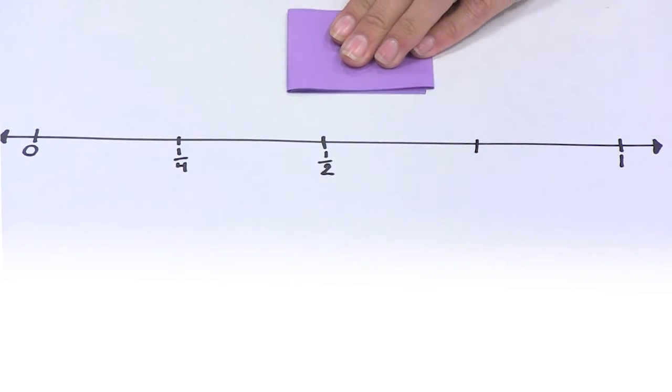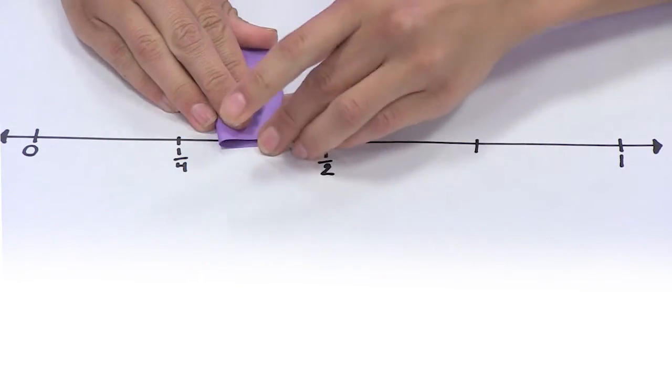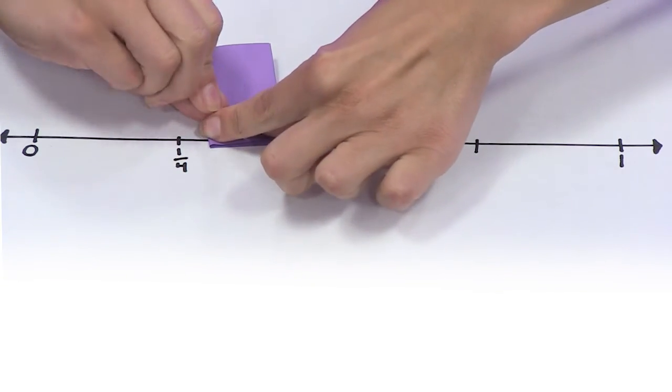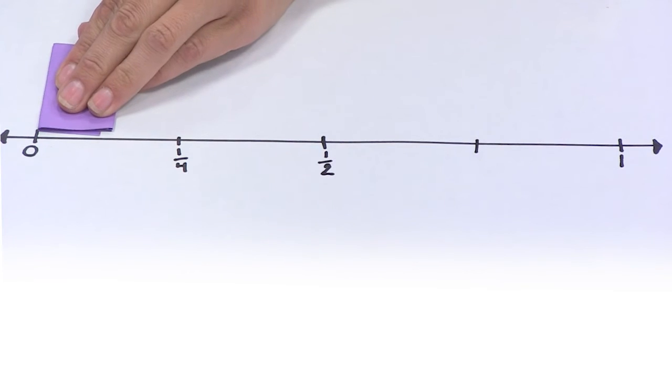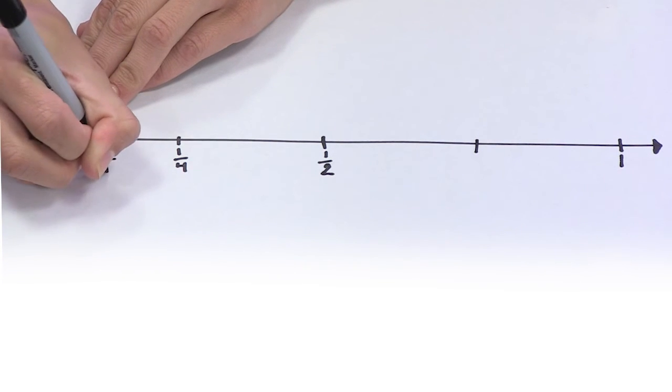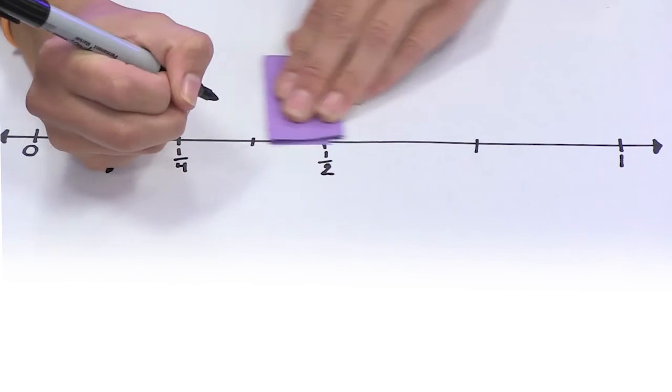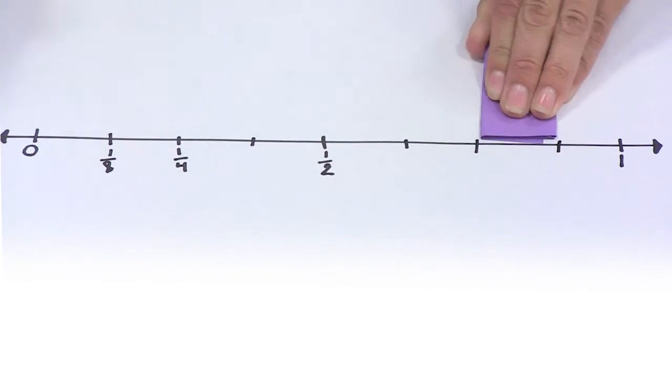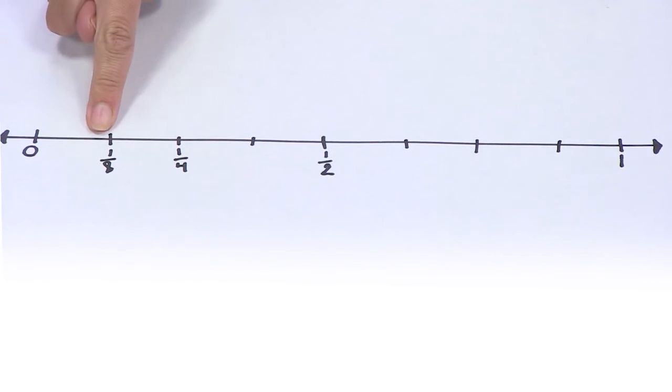If I even wanted to go a step farther, I can fold my paper in half one more time to create eighths. By folding paper, I was able to partition my number line into equal pieces. I can use the same technique for thirds and sixths.